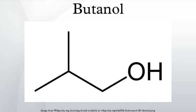The straight-chain isomer with the alcohol at an internal carbon is sec-butanol or 2-butanol. The branched isomer with the alcohol at a terminal carbon is isobutanol or 2-methyl-1-propanol, and the branched isomer with the alcohol at the internal carbon is tert-butanol or 2-methyl-2-propanol.